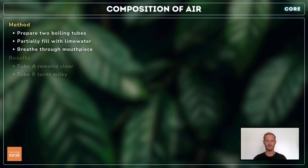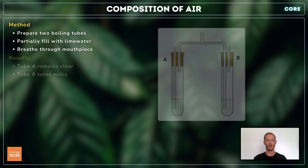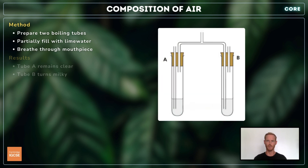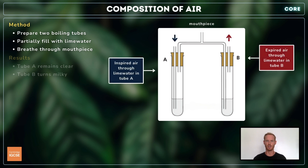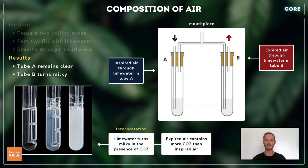Next, you need to investigate the differences in composition between inspired and expired air. Partially fill two boiling tubes with lime water, seal and insert delivery tubes. Breathe in and out through the mouthpiece for 15 to 30 seconds. The way the delivery tubes are set up means that atmospheric air is drawn in through the lime water in tube A, and expired air is forced out through the lime water in tube B. The lime water in tube A remains clear, and the water in tube B turns milky, indicating the presence of carbon dioxide.